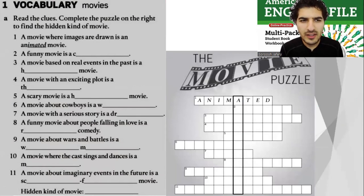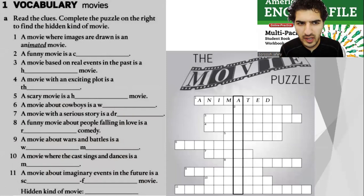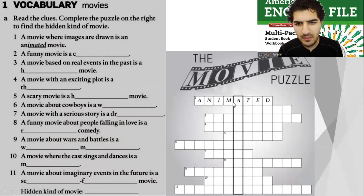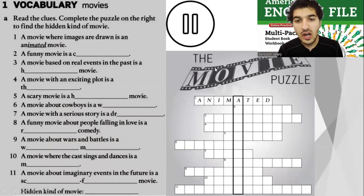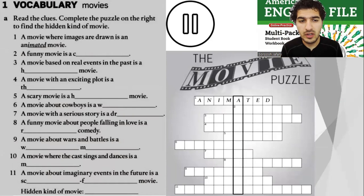Read the clues and complete the puzzle on the right, and find the hidden kind of movie. For example, number one is done: a movie where images are drawn is an animated movie. You can see this is part of the keyword. Stop the video and do it yourself. Very good, now check with your friends. Let's do it together.